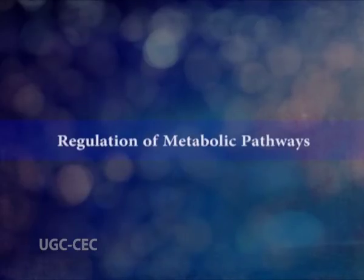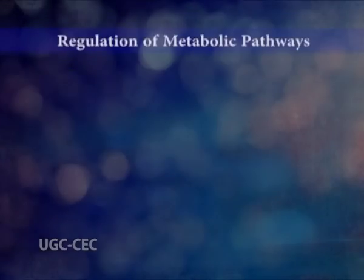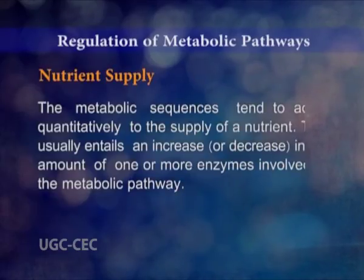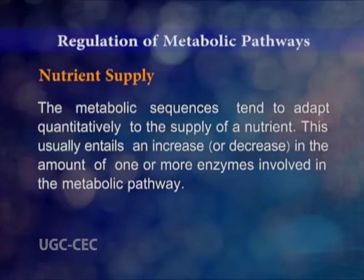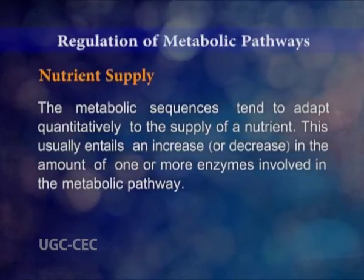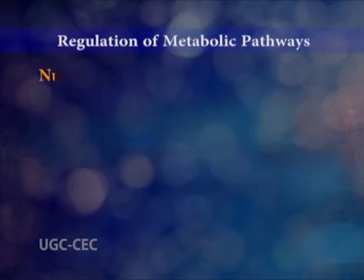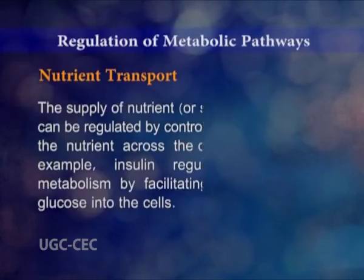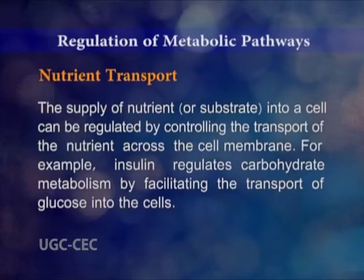Next is the regulation of metabolic pathways. The regulatory mechanism is very necessary — it maintains a balance between the various anabolic and catabolic pathways. It is accomplished by many control mechanisms. These mechanisms may act directly at a local or subcellular level or indirectly at an extracellular level. Metabolic pathways are regulated by: 1. Nutrient supply — the metabolic sequences tend to add up quantitatively to the supply of a nutrient, usually entailing an increase or decrease in the amount of one or more enzymes involved in the metabolic pathway. 2. Nutrient transport — the supply of nutrient or substrate into a cell can be regulated by controlling the transport of nutrients across the cell membrane. For example, insulin regulates carbohydrate metabolism by facilitating the transport of glucose into the cells.